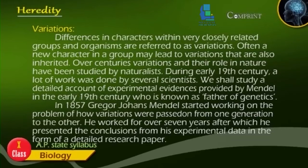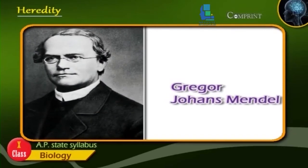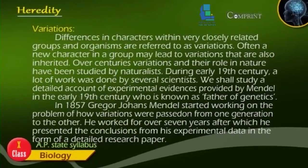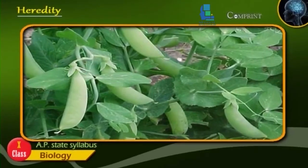During the early 19th century, a lot of work was done by several scientists. We shall study a detailed account of experimental evidences provided by Mendel in the early 19th century, who is known as the father of genetics. In 1857, Gregor Johann Mendel started working on the problem of how variations were passed on from one generation to the other. He worked for over seven years, after which he presented his conclusions from experimental data in the form of a detailed research paper. Mendel made many careful observations of plants and found that pea plants would be most suitable to carry on further experimentation.